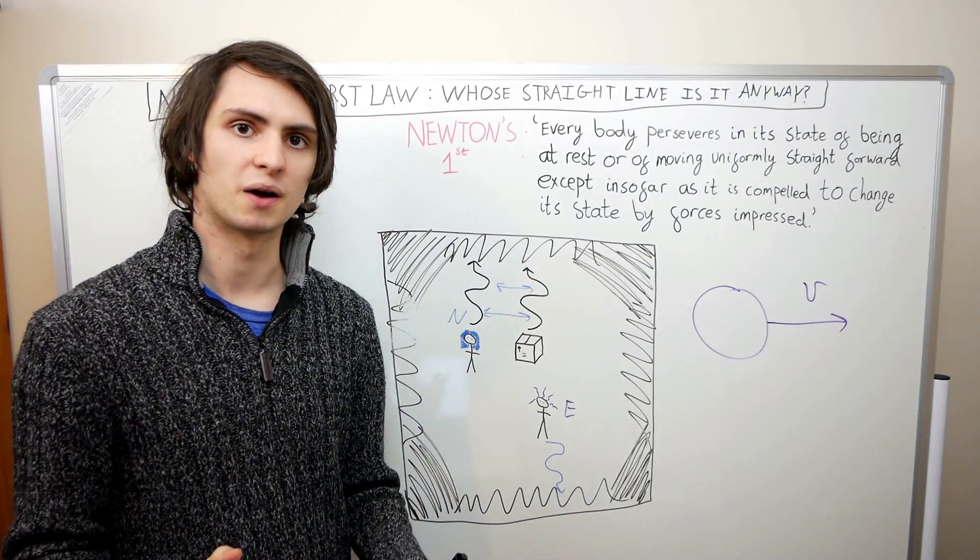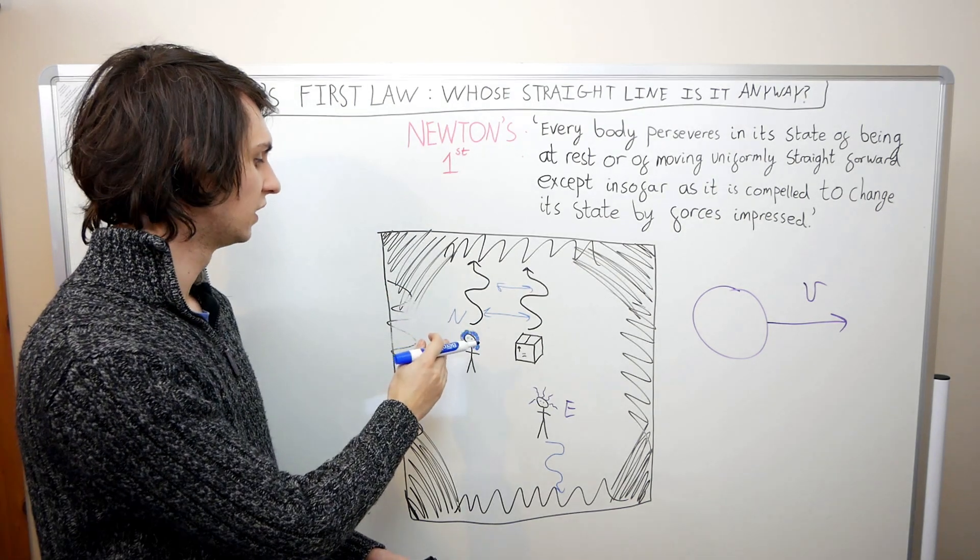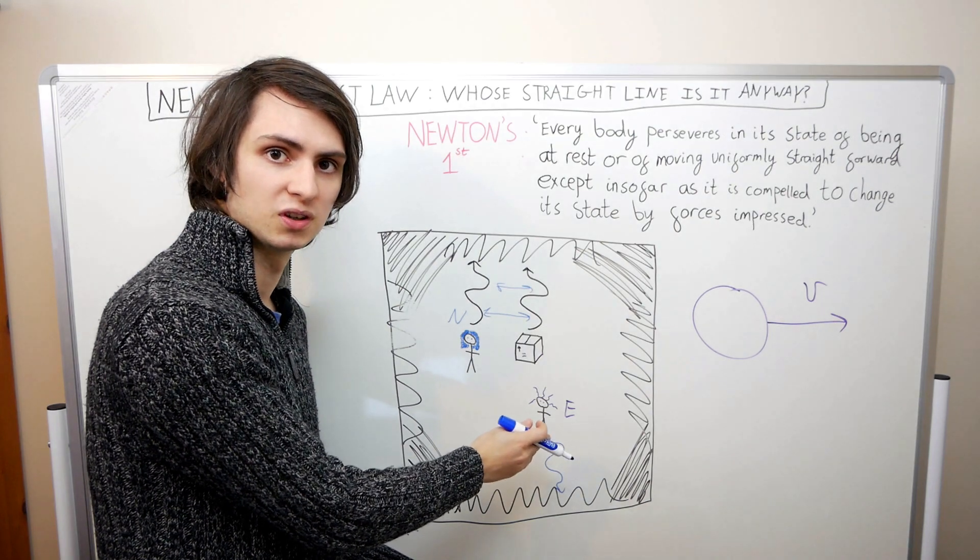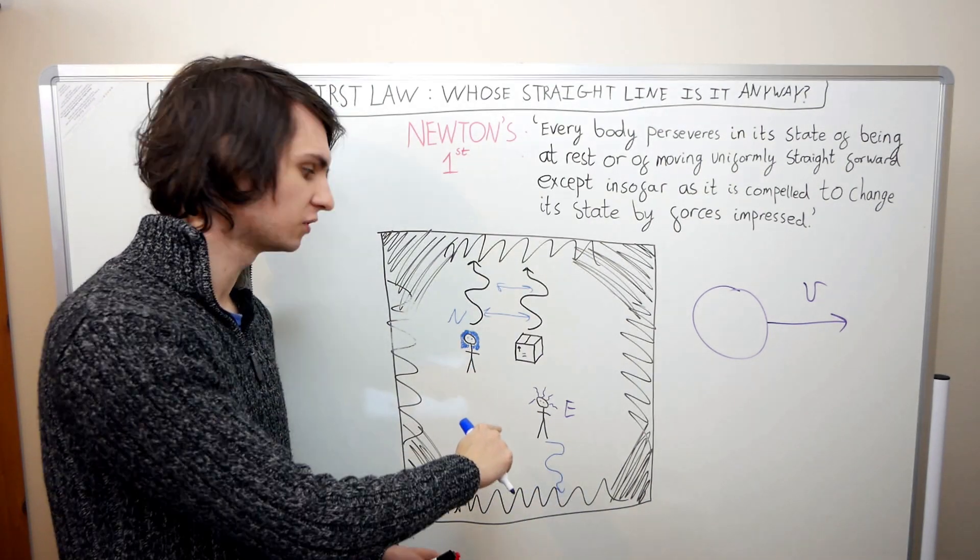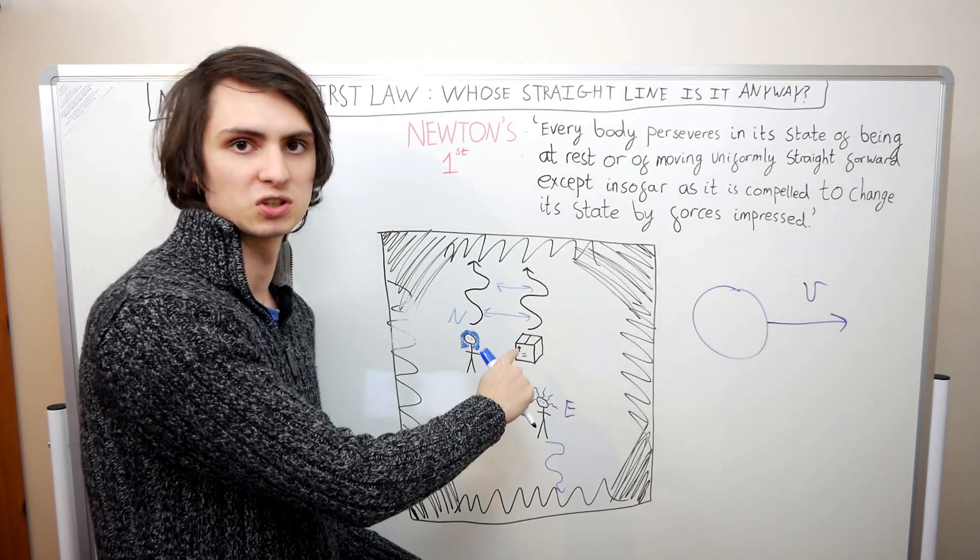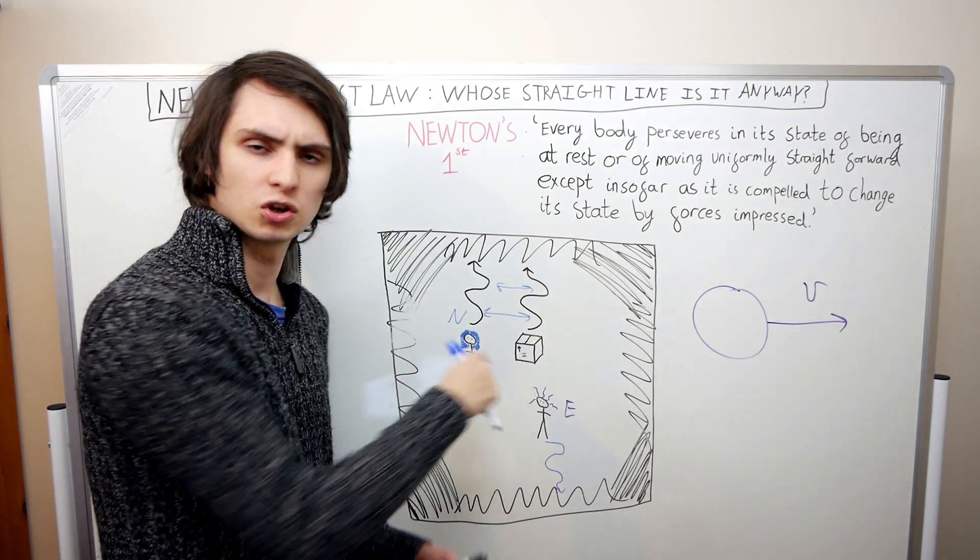So what we have now is that from Newton's perspective, him and the box are force-free, and Einstein is being acted on by a force. But from Einstein's perspective, Einstein isn't being acted on by a force, it's Newton and the box that's being acted on by a force. So who's right?